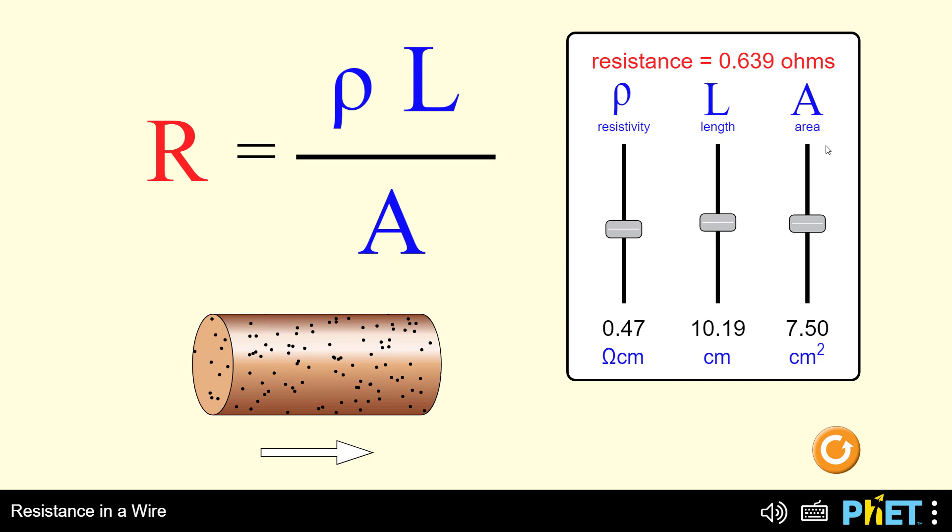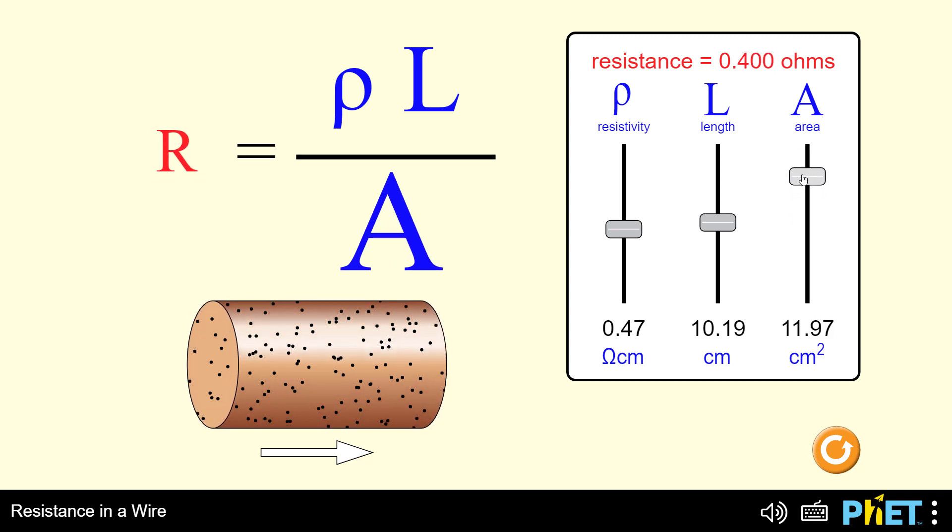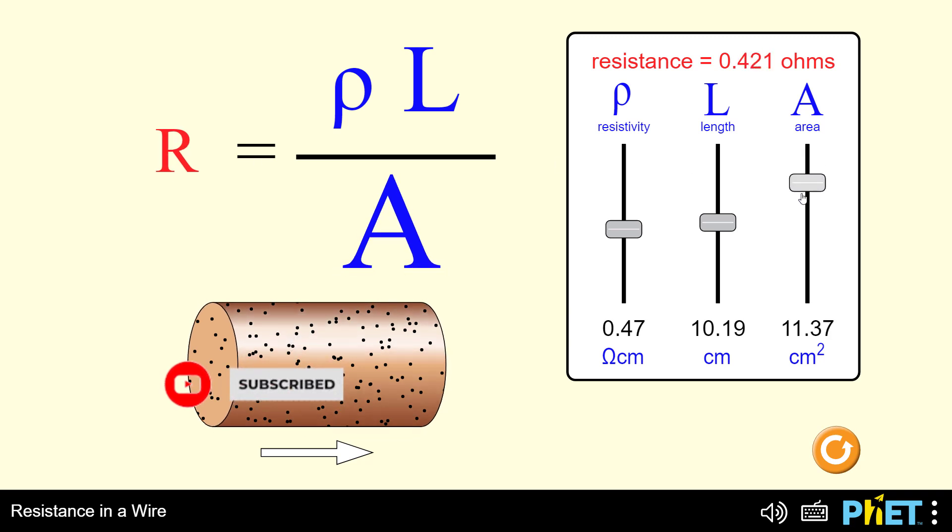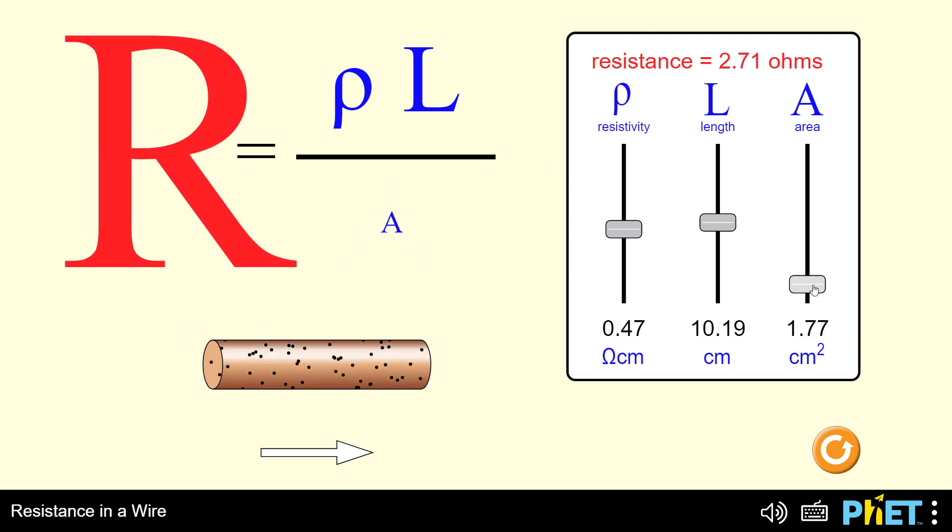We test the relationship of cross-sectional area with resistance. We will notice that the more we increase the cross-sectional area, the value of the resistance decreases. As the cross-sectional area decreases, the resistance value increases.